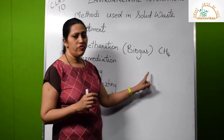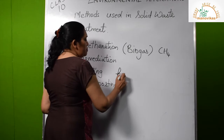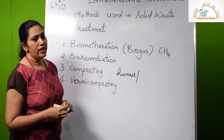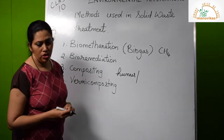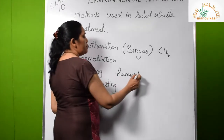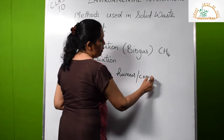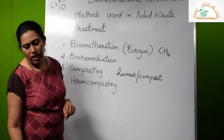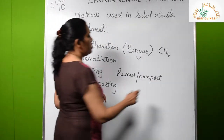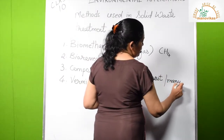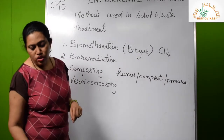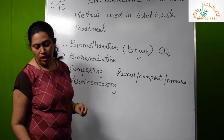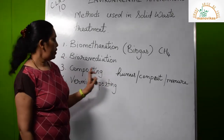The end product formed is rich in minerals — NPK, that is nitrogen, phosphorus, and potassium. It also increases the water-holding capacity of the soil. This humus or compost can also be called manure. It is a very rich fertilizer, provides elements like magnesium and copper to the plants, and also prevents soil erosion.